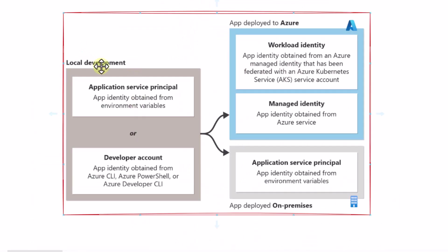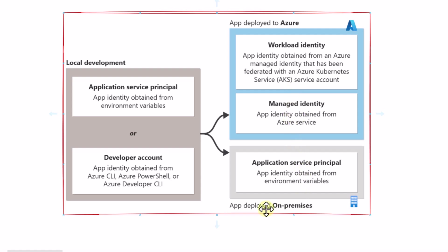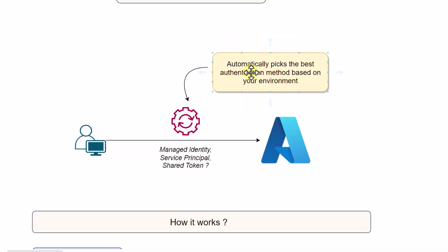When we are doing local development, we would primarily be using application service principals to connect to Azure services, or we would be using a developer account such as Azure CLI, PowerShell, or Azure Developer CLI. But whenever an app is deployed on Azure, we cannot use those developer account mechanisms — we have to use managed identity. If your application is deployed on-premises, you can use the service principal.